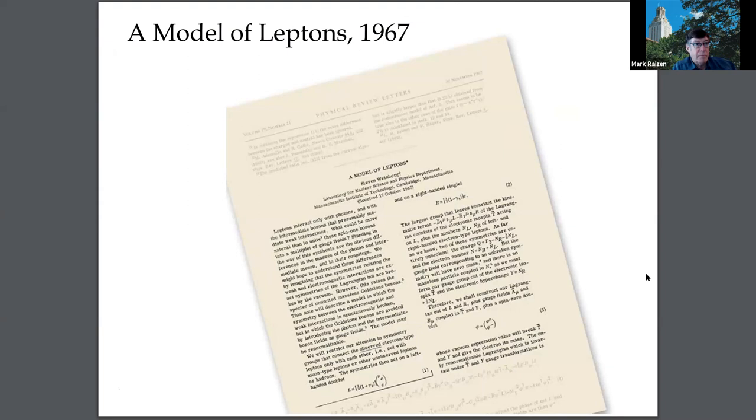A model of leptons. Steve's remarkable 1967 paper, a model of leptons, unified electromagnetism and the weak nuclear interaction into one framework, his electroweak theory. In three pages, actually two and a half pages, he used gauge theory to predict W and Z bosons as mediators of the weak interaction, their masses, the existence of neutral currents, and a Higgs boson. All subsequently confirmed by experiment.